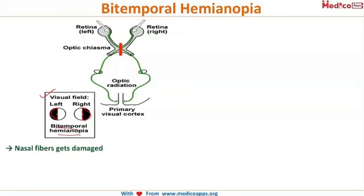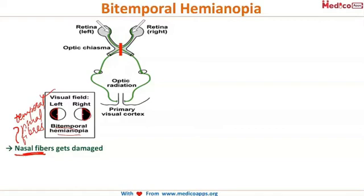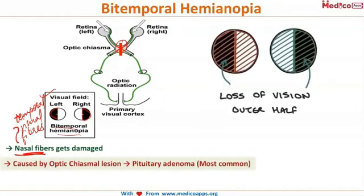Why does this occur? As we've seen in glaucoma classes, the nasal fibers of the retina cause temporal vision and vice versa — the temporal visual field is controlled by nasal fibers, and the nasal visual field is controlled by temporal fibers. So when both temporal fields are damaged, both nasal fibers must be damaged, and this occurs where these fibers cross — at the optic chiasma.